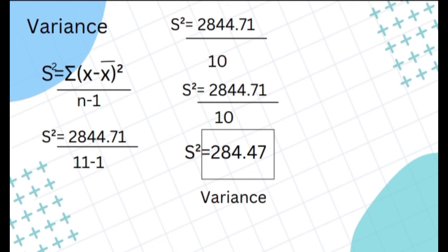For variance, using the formula s-squared equals 2,844.71 over 11 minus 1, which is 10. So 2,844.71 divided by 10 equals 284.47. That is our variance.